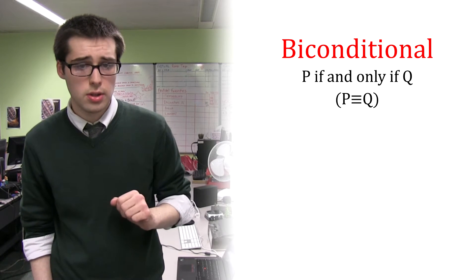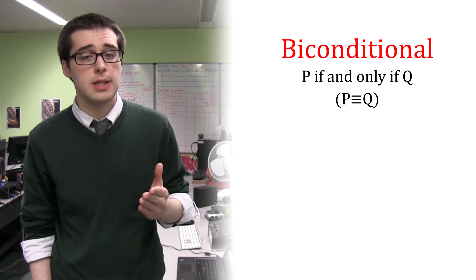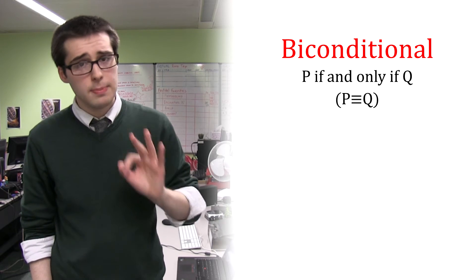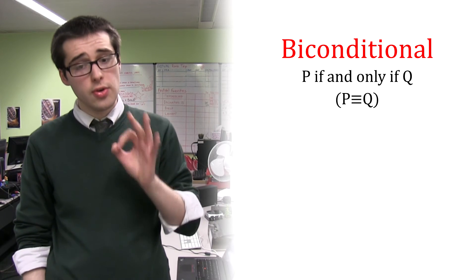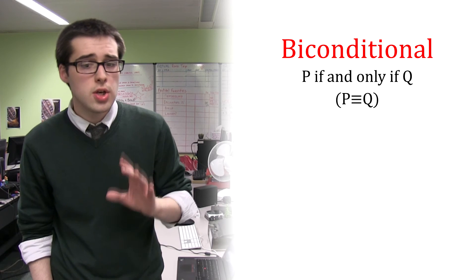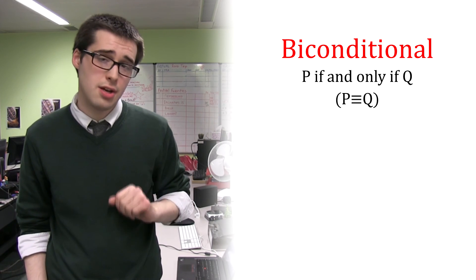Unlike the conditional, it doesn't matter which formula goes to the left of the triple bar and which formula goes to the right. This is because the biconditional means that the truth values of the formulas involved are equivalent. Truth value equivalents will be covered in a later series.